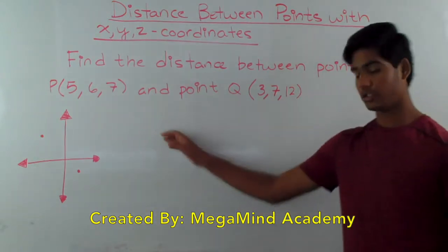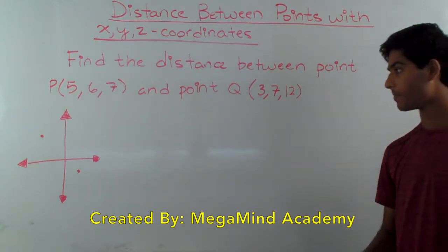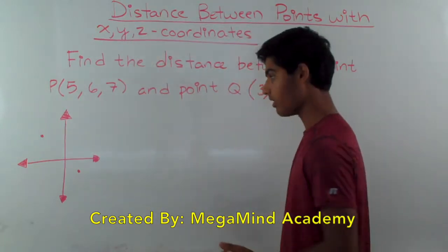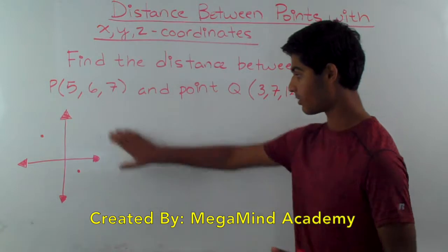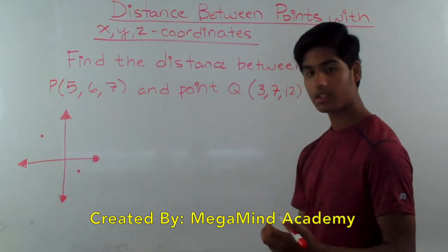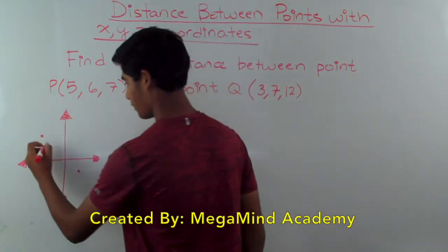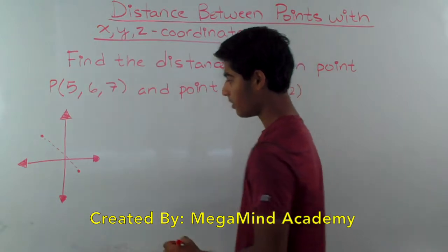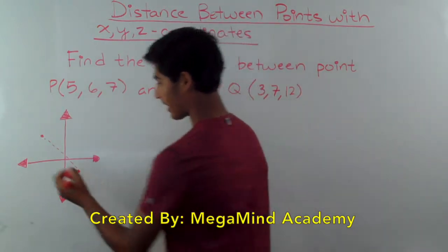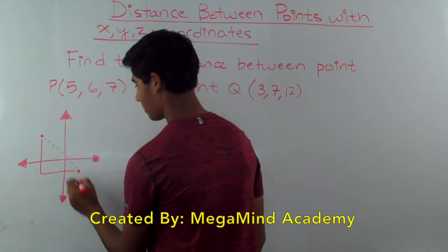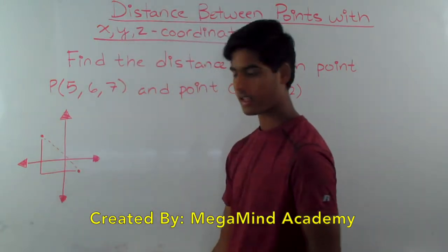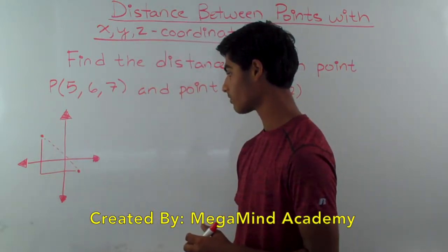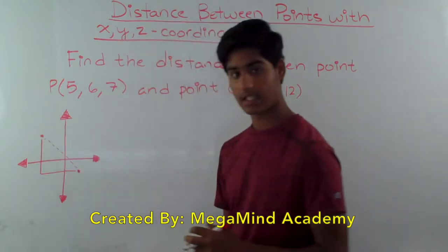Before we dive into the problem, let's figure out how to solve it. Here we have a regular x and y plane — not with the z. With an x, y, z coordinate plane, this would be the flat part. We just want to find the distance between the two points, and we do that using the distance formula. What the distance formula really is, is just the Pythagorean theorem. We find these two lengths, and then we find the hypotenuse using the Pythagorean theorem. That's how we find the lateral distance between the points.